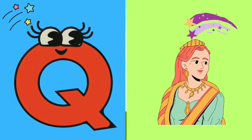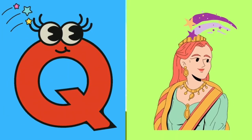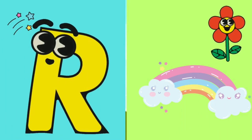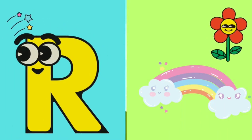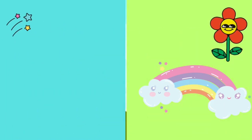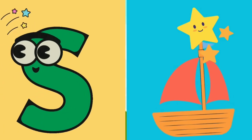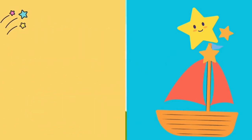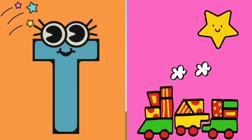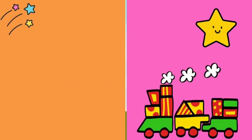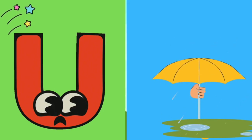Q for Coin. R for Rambo. S for Ship. D for Terrain. U for Umbrella.